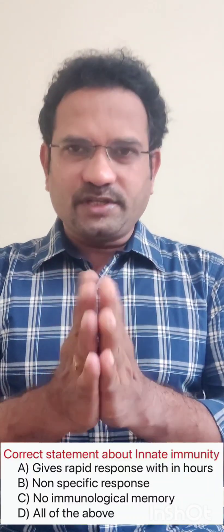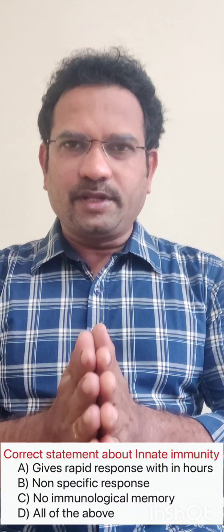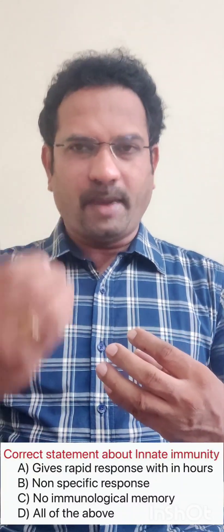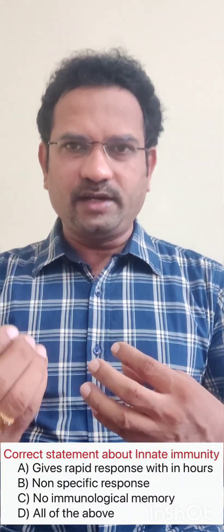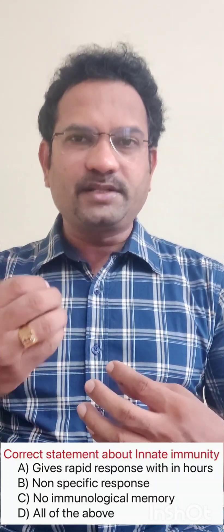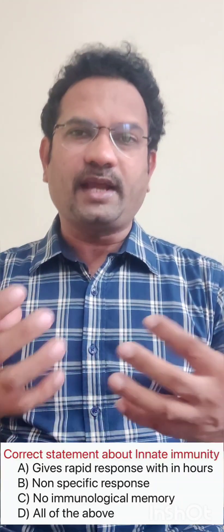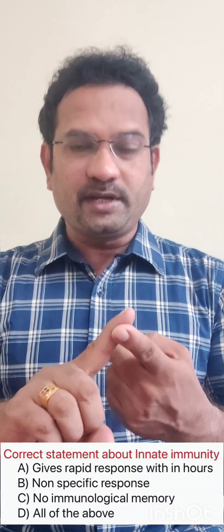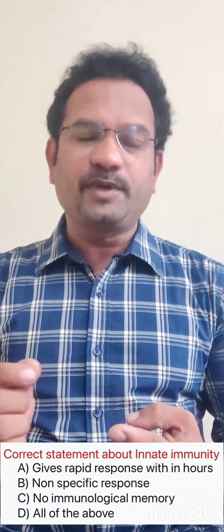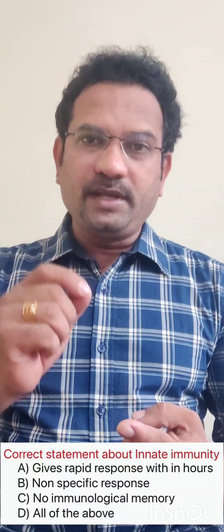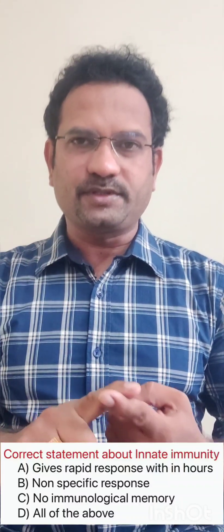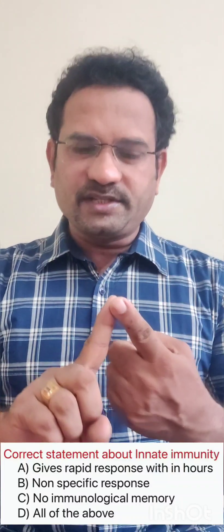The question is about innate immunity. The response of innate immunity is immediate. If you get a bacterial or viral infection, immediately white blood cells and everything will get activated and react with it. So innate immunity response is immediate. Whereas adaptive or acquired immunity, because of B-lymphocytes and T-lymphocytes, it will take some time to show the response. So option A is correct.